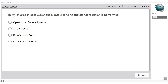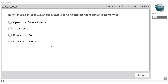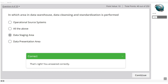In which area of a data warehouse is data cleansing and data standardization performed? Data comes from multiple sources in various formats. For example, an address field could have non-standard abbreviations. We don't make changes on the source system; instead, when data is loaded into the staging area, that is where changes are made. So the data staging area is the correct answer.